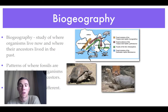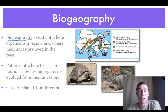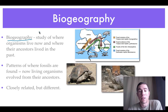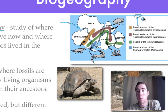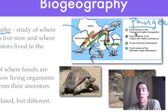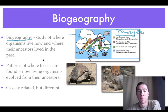We'll start with evidence of evolution by talking about a term called biogeography. Biogeography is the study of where organisms live now and where their ancestors lived in the past. You may have seen this picture of Pangaea — when all the continents were really close to one another. There's fossil evidence showing how organisms are connected across these continents, and the patterns of these fossil finds support that now-living organisms evolved from common ancestors.